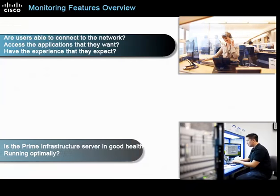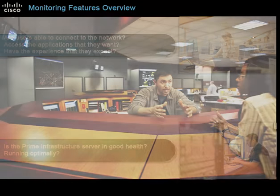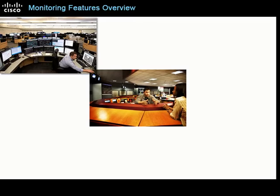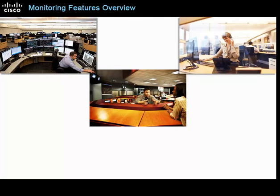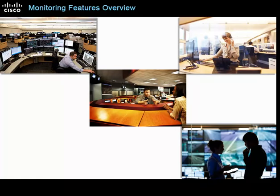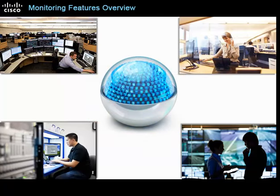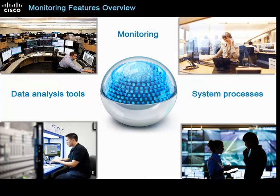Monitoring the platform involves ensuring the Prime Infrastructure server is in good health and running optimally. In fact, monitoring the network involves every aspect of ensuring the network infrastructure is operating efficiently, can meet user requests and respond to varying demands, and meets operational and business requirements. Recognizing the range of Cisco Prime Infrastructure monitoring capabilities, key data analysis tools, and the underlying system processes that collect network data will help you manage your monitoring tasks more efficiently and effectively.